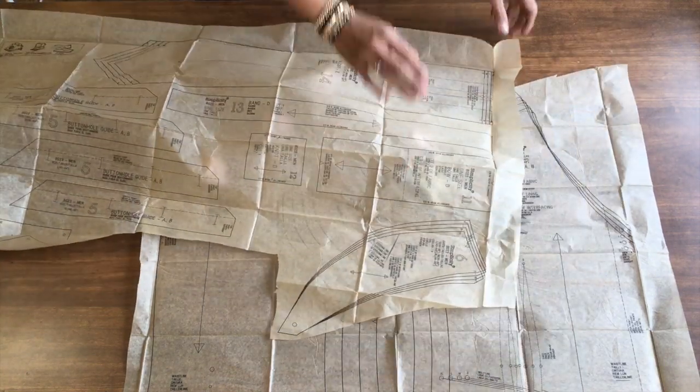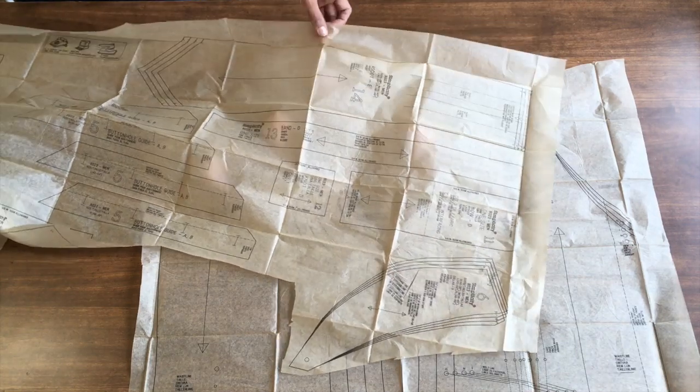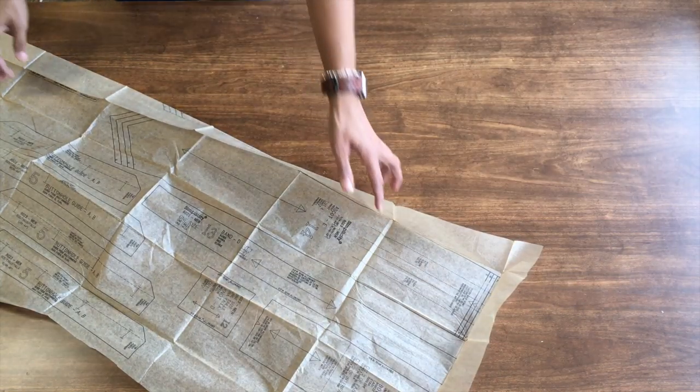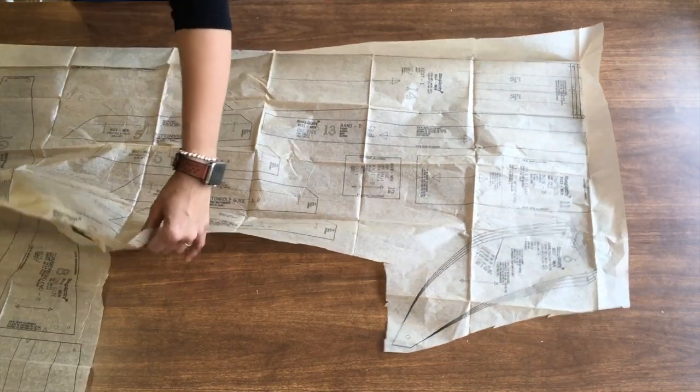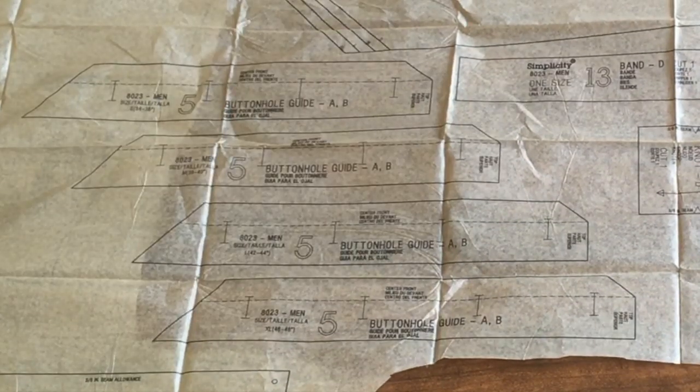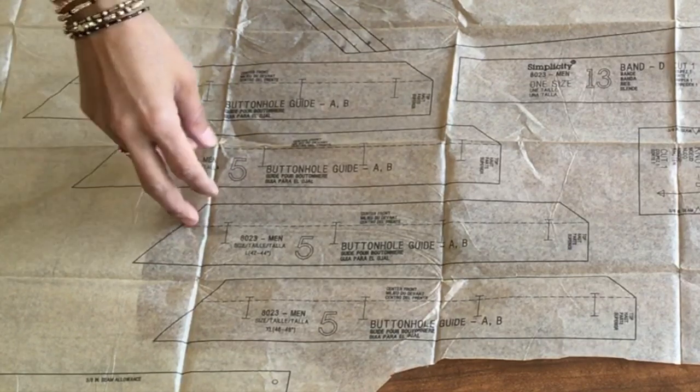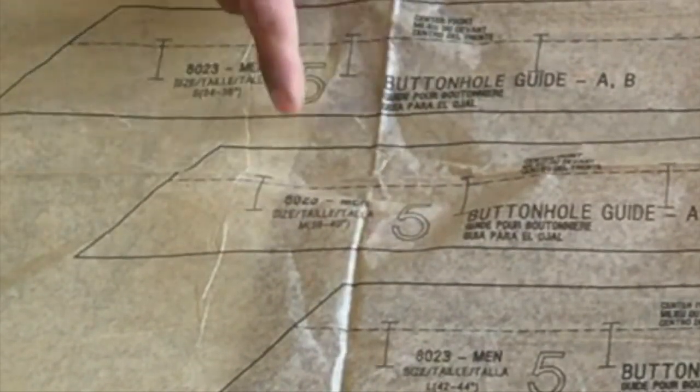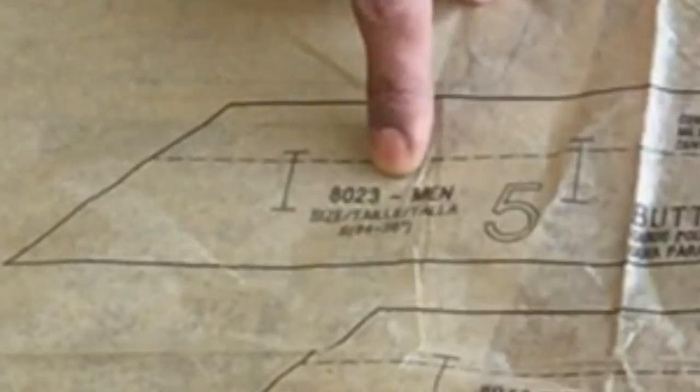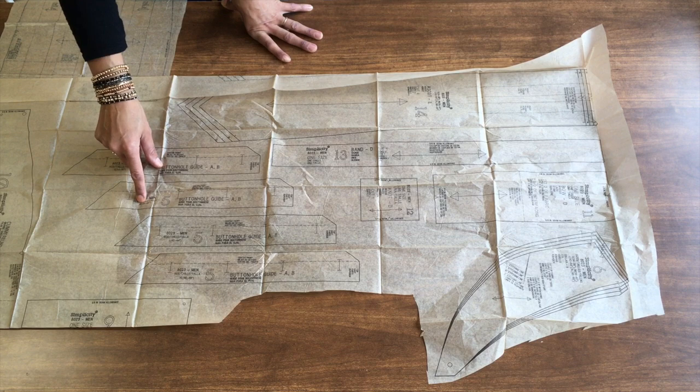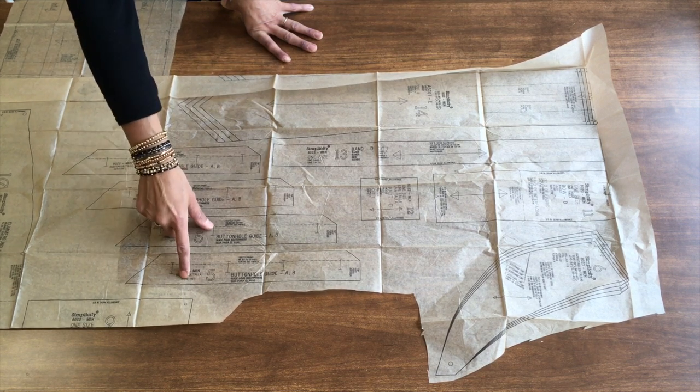So I don't actually need the rest of this. So to make it easy for me, I've cut out a rough cut around the pieces I do need. Because this is actually, there's one, two, three, four fives. And that's for the different sizes. So we have the small, the medium, the large and the extra large. I'm making the medium. So I need to make sure that I cut out the medium size. And it says so on there. So it tells you 8023 men. It tells you the size. So it says here small. Over here it says medium for size 38 to 40. Large and extra large.